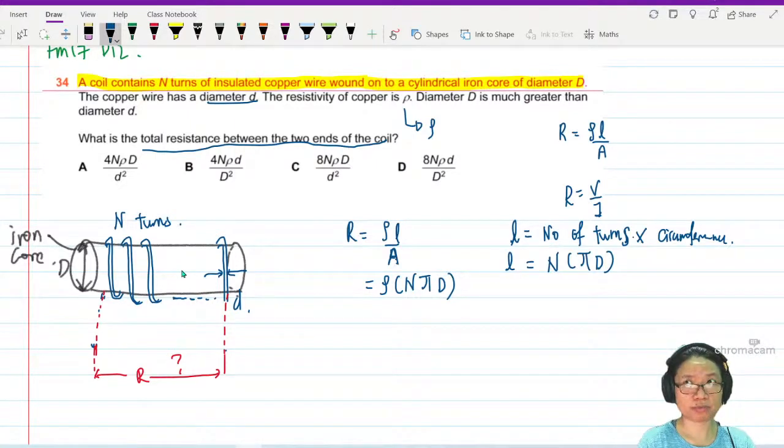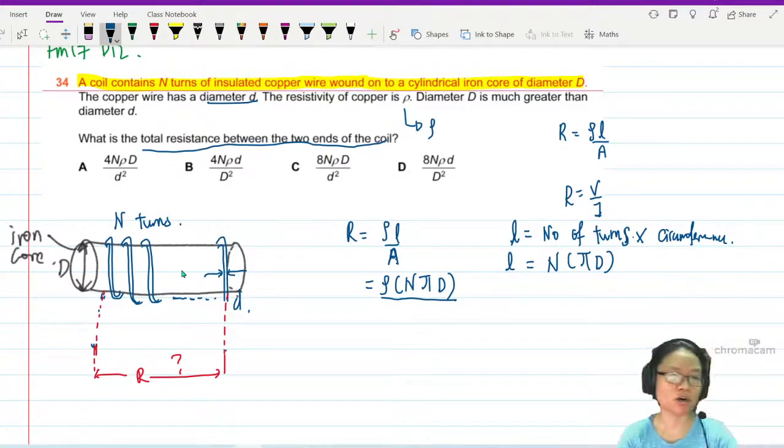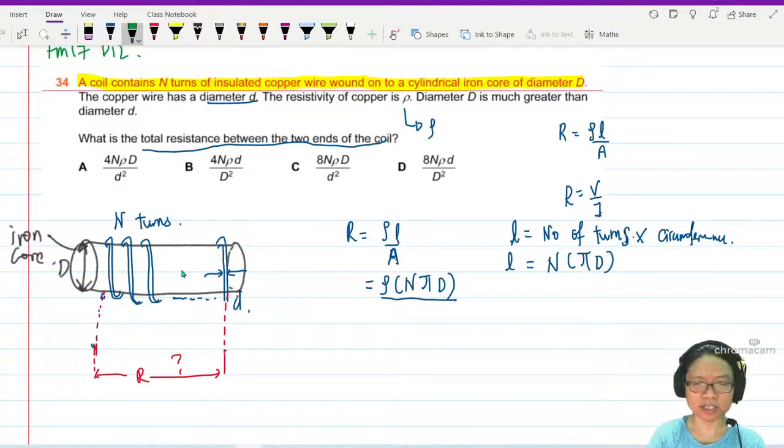Circumference is pi D, right? My 14-year-old brain say yes, it's pi D. Okay, what about area? Area is area of this coil thingy, thingy magic here. So this will be pi d squared over 4.